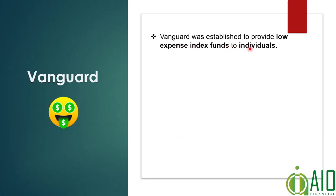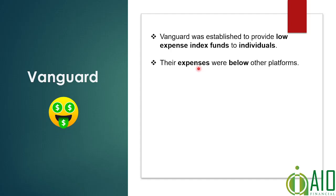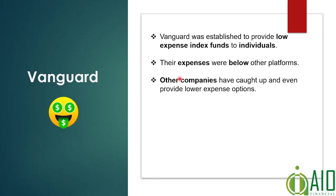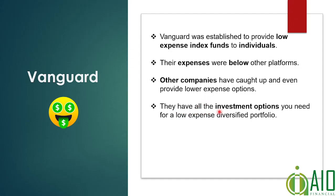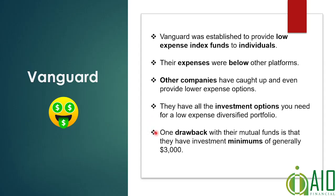Vanguard is great. They have low expense funds — they used to be the leader in inexpensive low-expense indexes, but everyone has caught up to them at this point. They have all the basic investment options for a diversified portfolio, no problems, really no complaints. The differences between Schwab and Vanguard are slight.